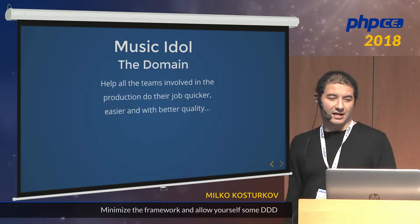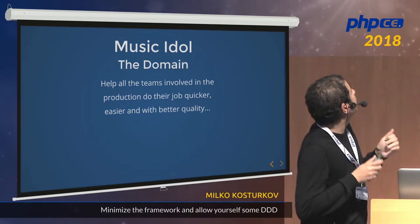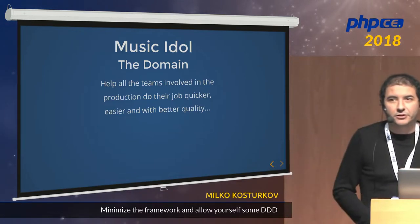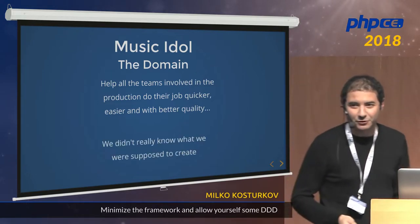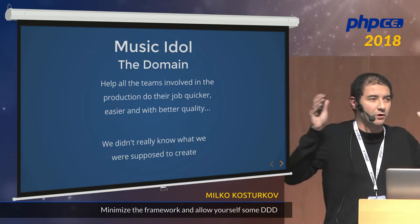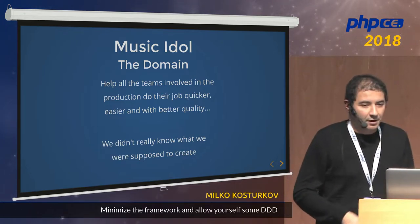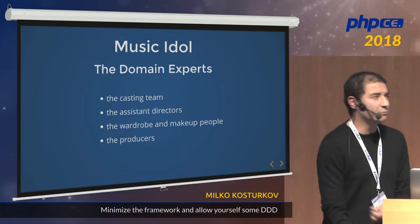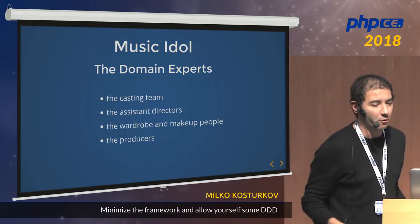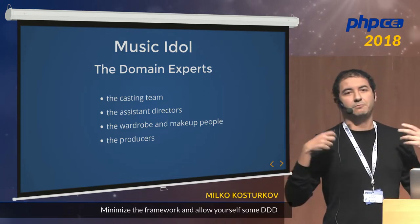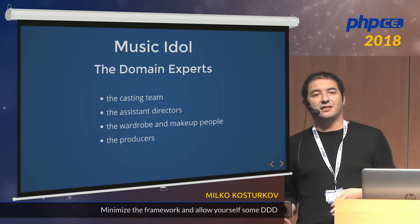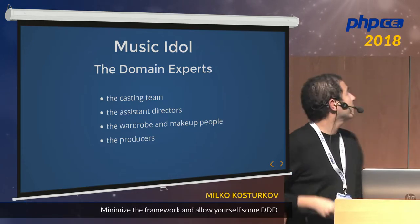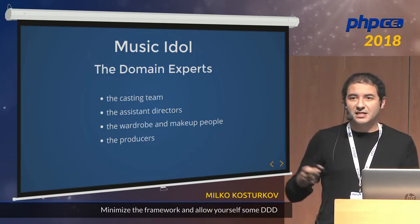So let's see what the domain of Music Idol was. We had to build software that would help the team be more productive and do their job better. Essentially, we didn't have an idea what we were supposed to do. We don't know what the show is — just build the software. The first thing we did was start talking to the domain experts: the people who would actually do the show. These were the casting team — the people dealing with selecting candidates, filling out their forms, looking at pictures, deciding who's fun. We also had a team of assistant directors, who would go through gazillion tons of video footage stored on videotapes.